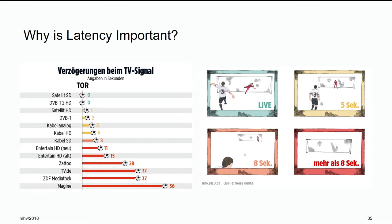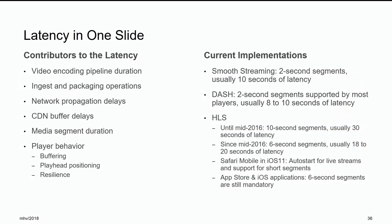Why is latency important? If you're a soccer fan, the satellite or cable broadcast might be showing the goal, whereas if you're streaming — especially over HLS — you could be 45 seconds behind the live point. That's a big problem for a lot of people. There are a lot of things that contribute to latency: the encoding pipeline, ingest and packaging, network propagation delays, CDN buffer delays, media segment duration, and player behavior. Most of the problems are in the player — if you fix your player you might really be able to reduce latency.